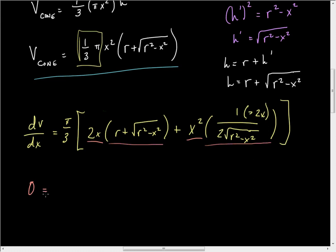And that being done, then we can divide both sides by pi over 3 and simply just run with the 2XR plus 2X root R squared minus X squared plus. And now this is going to be a negative, and these twos go away, but this will be a negative X cubed over square root of R squared minus X squared.